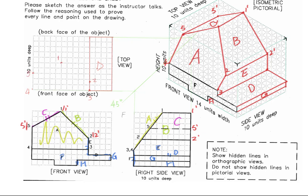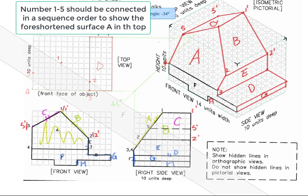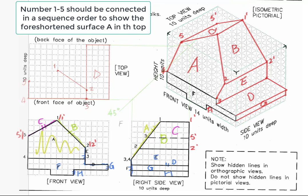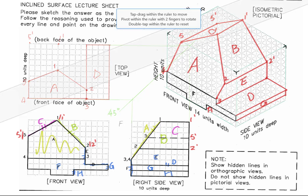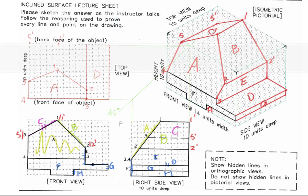Once all of the numbers are marked in the top, connect them in sequence order to see the foreshortened surface A in the top. Now switch to the foreshortened surface C. Surface C involves number 1, number 5, number 5 prime, and number 1 prime. Locate 1 prime and 5 prime, then have the four numbers connected in sequence order to see the foreshortened surface C.